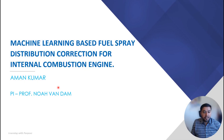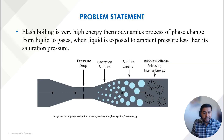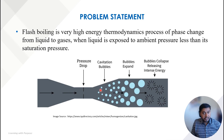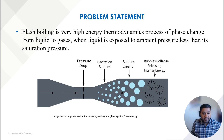Hello everyone, my name is Aman Kumar, and today I will be discussing the topic of machine learning based fuel spray distribution correction under flash boiling conditions. Flash boiling occurs when fuel is injected into an ambient condition where the ambient pressure is below its saturation pressure, causing it to convert from liquid to gas very rapidly in order to maintain thermodynamic equilibrium.